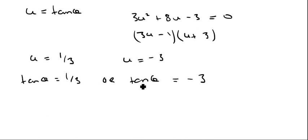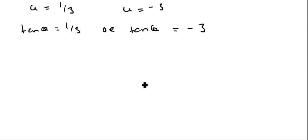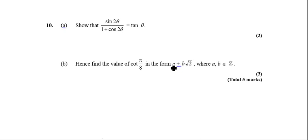So next one, let's look at that first bit. We've got sin 2θ over 1 plus cos 2θ. We've got to show that that is the same as tan θ. It's just a case of using the double angle formulas. Sin 2θ is the same as 2 sin θ cos θ, and cos 2θ I'm going to write that one as 1 plus 2 cos squared θ minus 1.